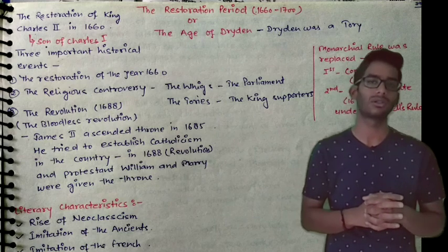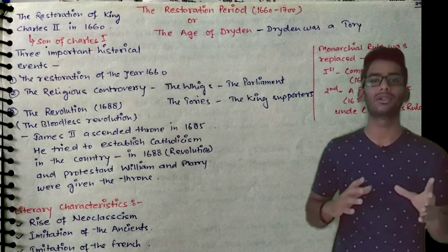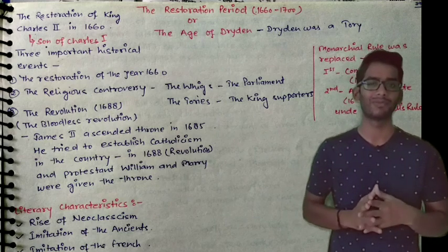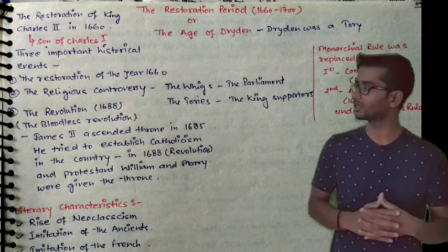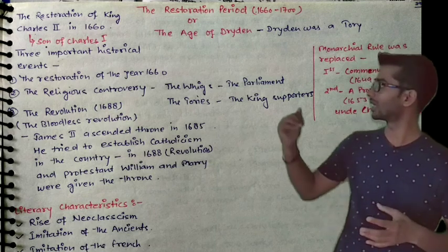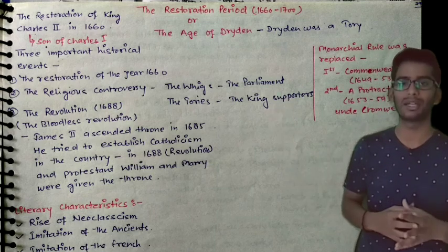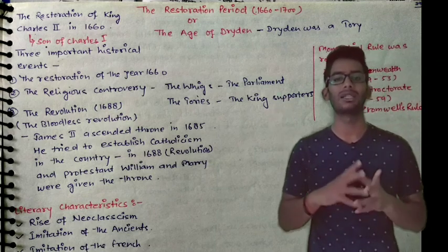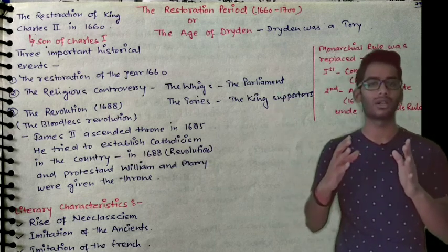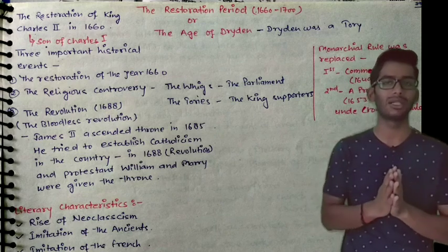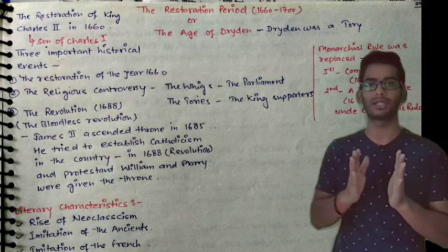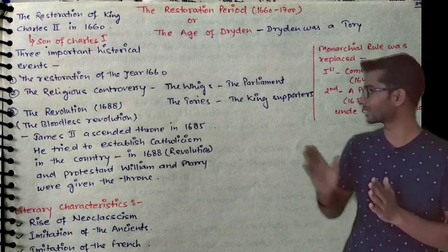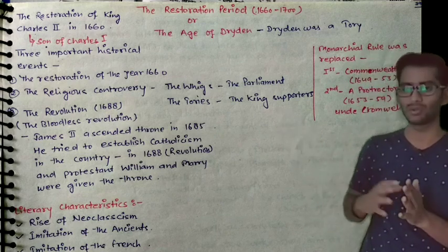Today we are going to talk about the Restoration — this is also called the Age of Dryden. You can remember for your exam that Dryden was a Tory. Now, who were Tories and Whigs? We will talk about it. I have written it in your notes.